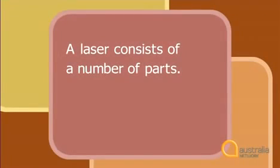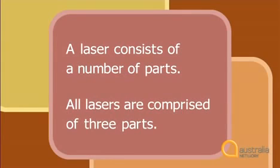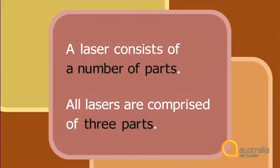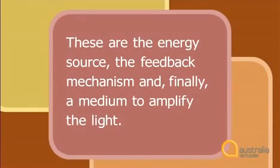In formal writing, we could structure this information in a number of ways. We might say: 'A laser consists of a number of parts' or 'All lasers are comprised of three parts.' Both sentences are structured to include a subject, a verb, and an object. You would then follow with a list detailing exactly what the three parts are: the energy source, the feedback mechanism, and finally a medium to amplify the light.